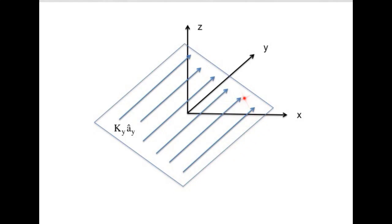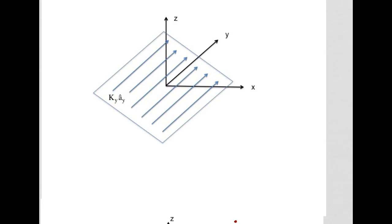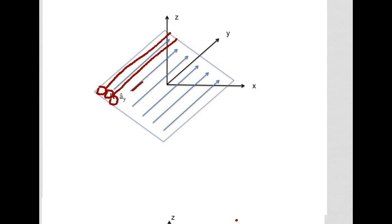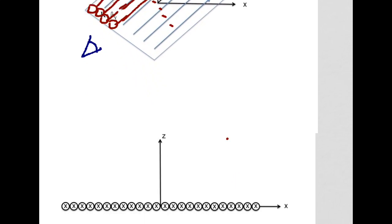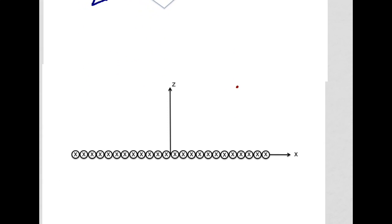Let's place the current sheet in the xy-plane with the current flowing in the y-direction with an amplitude of K_y amps per meter. We can visualize this current sheet as a series of wires that we lay side by side like this. So now let's think in terms of looking at the edge of our current sheet, where the current is flowing into the page in the a_y direction.